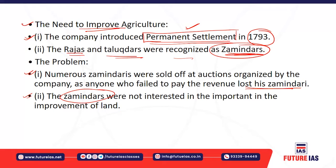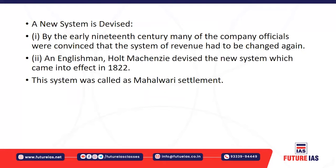The Zamindars were not interested in improving the land — they were more focused on collecting revenue. The company demanded a fixed revenue from Zamindars, who in turn forced the farmers to pay more and more. The cultivators were exploited at the hands of the Zamindars. The Zamindars used to pay a fixed amount to the company and kept whatever excess they collected from the farmers. This system was very oppressive for the cultivators. Their rent to the Zamindars was very high and their rights over the land were insecure.